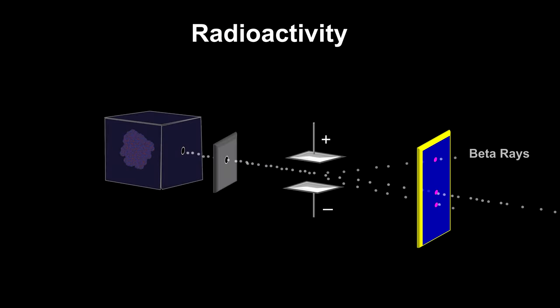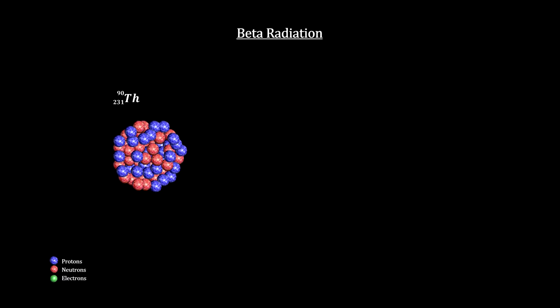One of my favorite particles is the neutrino. You'll recall from our segment on radiation that the beta rays were ejected electrons. What's happening here is that a neutron inside the nucleus of an atom is spontaneously decaying into a proton and ejecting an electron in the process.